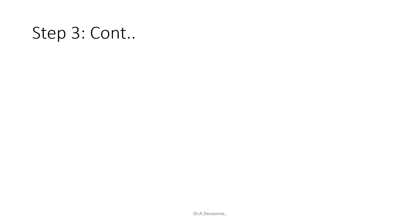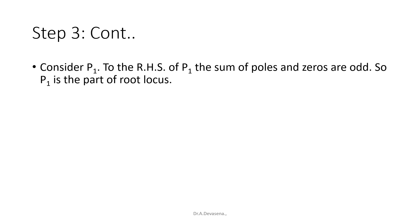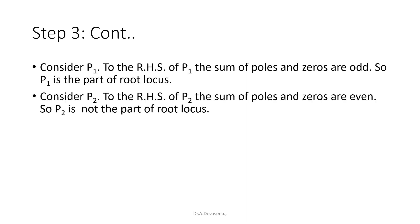Now we are going to identify the parts of the root locus on the real axis. Consider point P1: to the right-hand side of P1 the sum of poles and zeros is odd — only one pole — so P1 is part of the root locus. Consider point P2: to the right-hand side we have one pole and one zero, whose sum is even, so P2 is not part of the root locus.